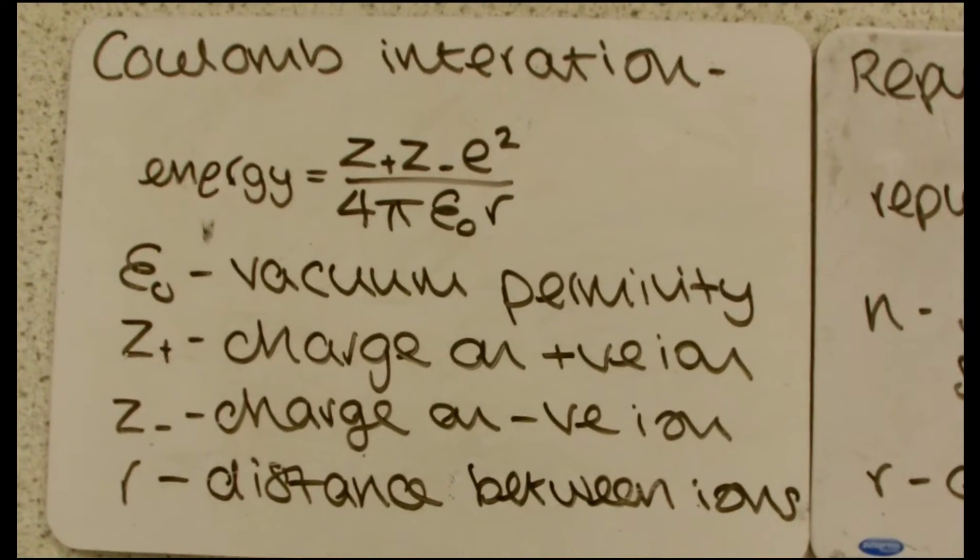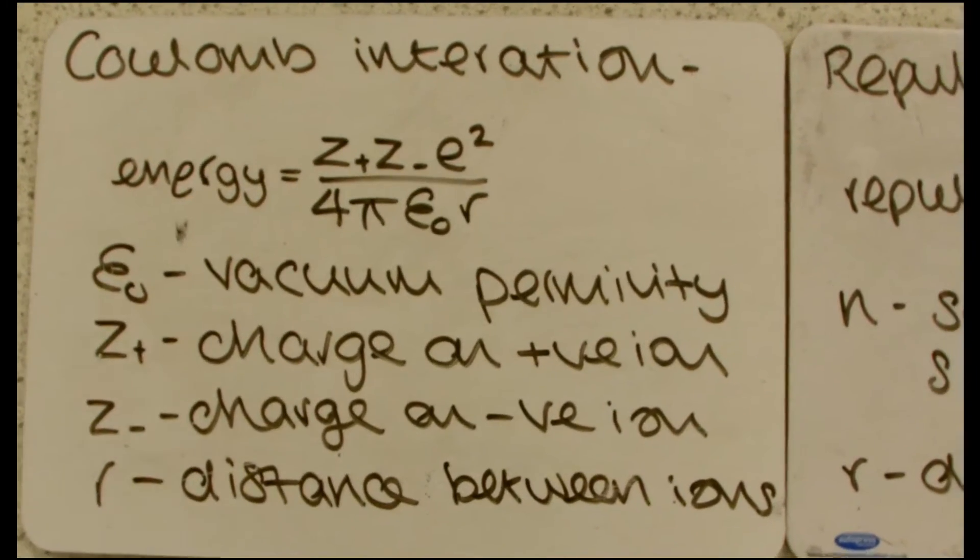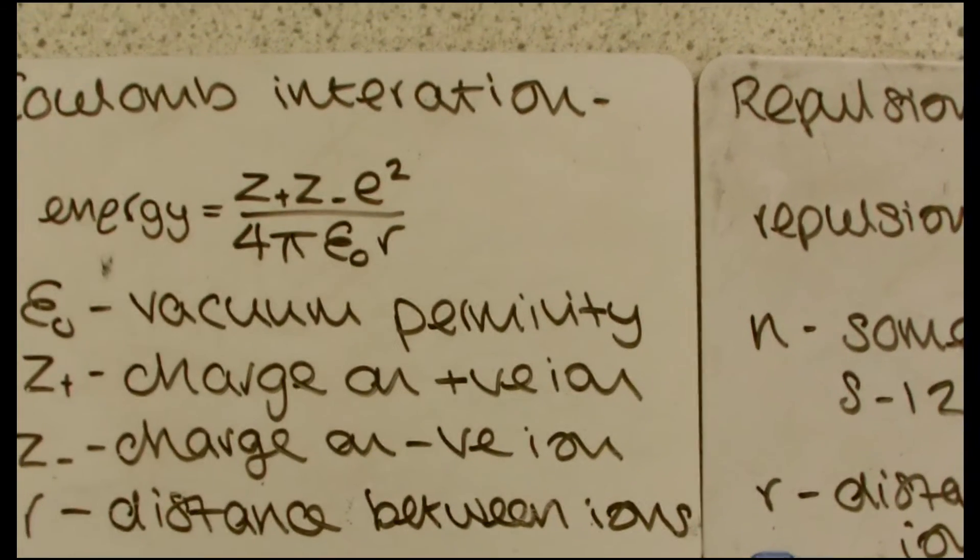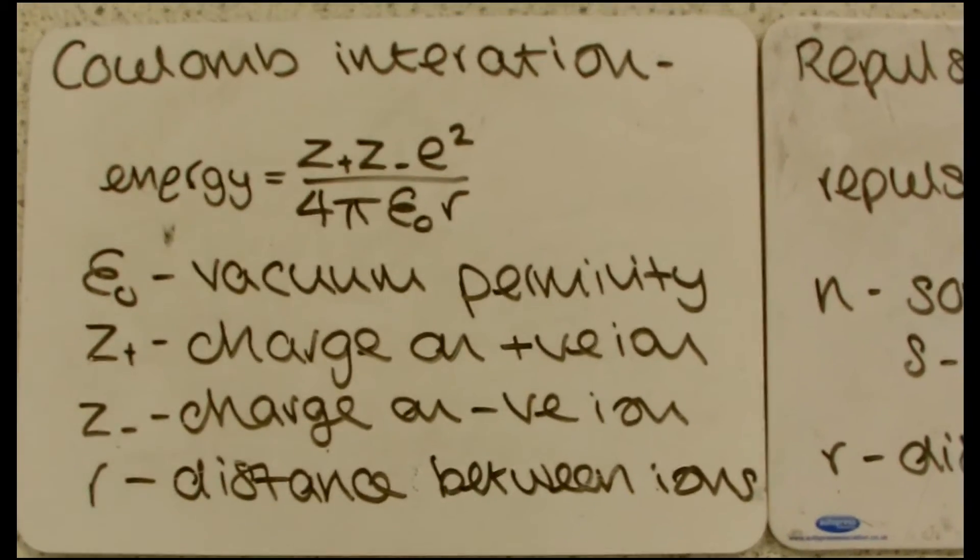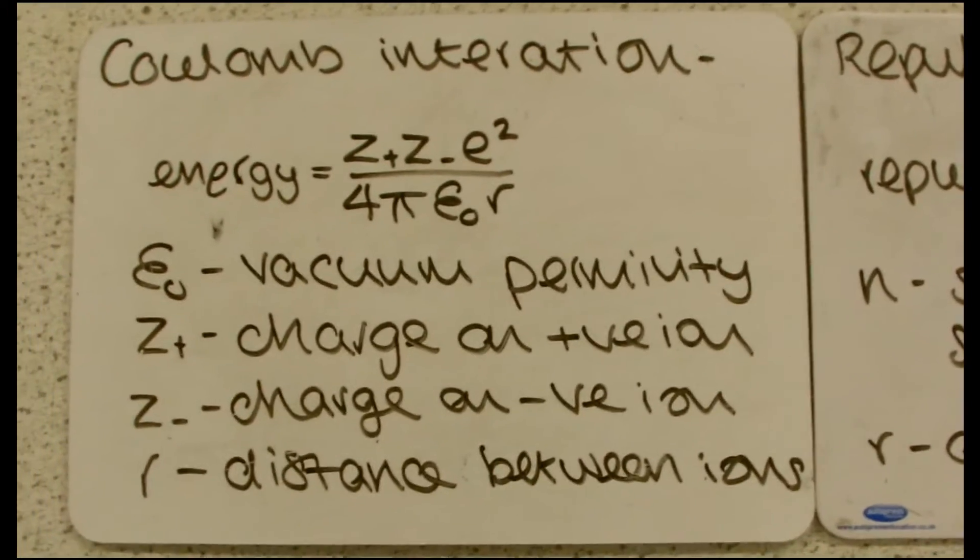So you can see that if we plot this as a graph, as R gets closer and closer to zero, the graph is going to go off really quickly to negative infinity. This isn't realistic.